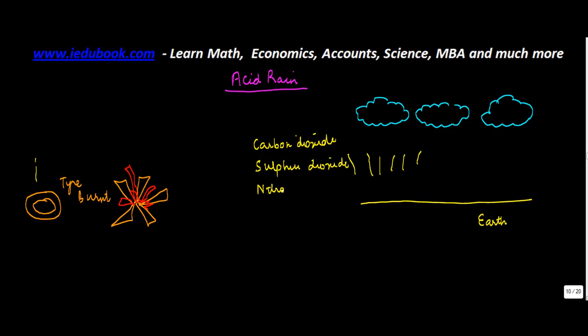As these objects are burned, these gases are released in the air. Now when it rains, the rainwater comes down and as this water comes down, it reacts with these gases. So carbon dioxide reacts with this to form carbonic acid.